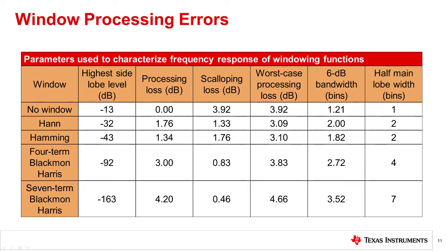Since the window function modifies the amplitude and frequency response of the sample data, there are some associated processing errors. This table summarizes these errors. In most cases, these error terms can be accounted for and corrected in software. This is taken care of automatically in our evaluation module software. Let's look at each error source.